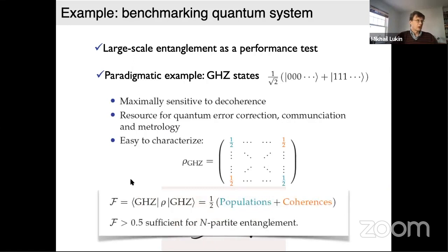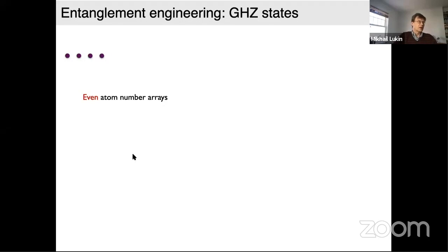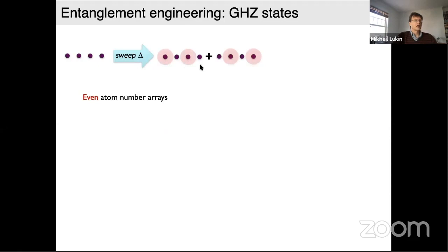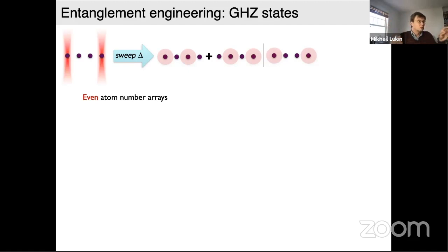To characterize the GHZ state, you need just the diagonal and two off-diagonal elements of the n-qubit density matrix. From those you can compute the fidelity — the overlap with the perfect state — and if the fidelity exceeds one half, that is sufficient to certify n-particle entanglement. To create this state, we use adiabatic sweeps with an even number of atoms, producing a superposition of up-down-up-down and down-up-down-up configurations.